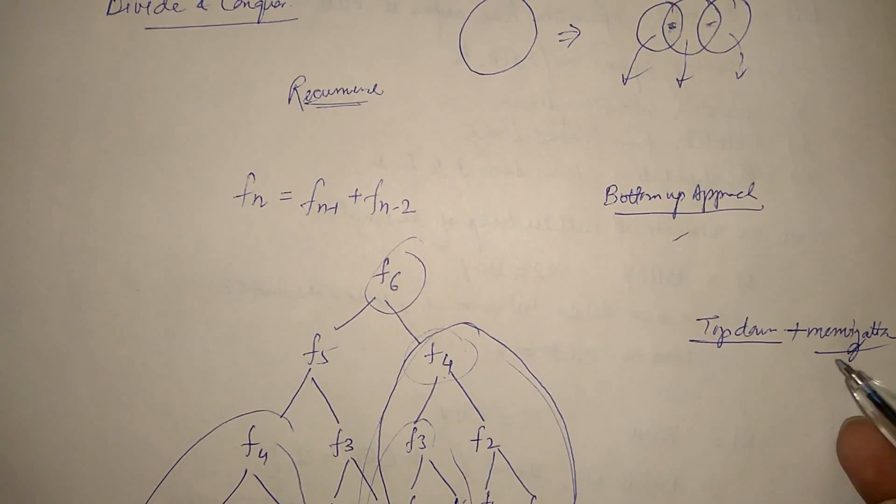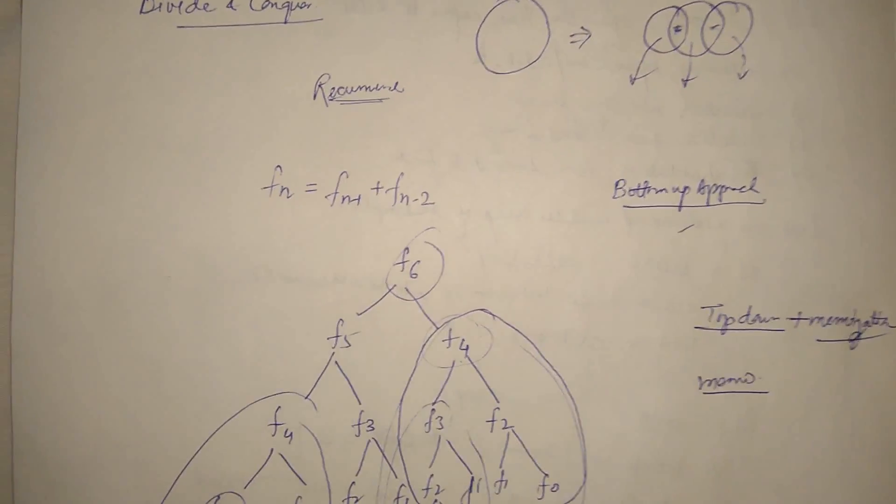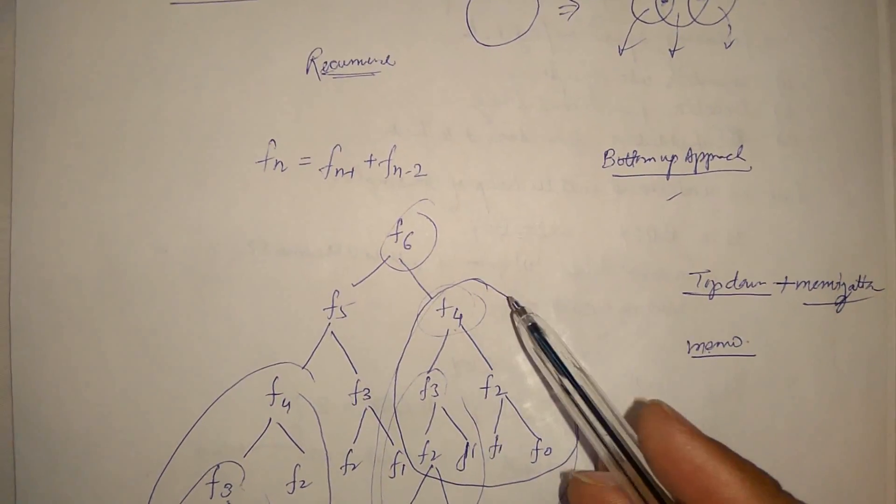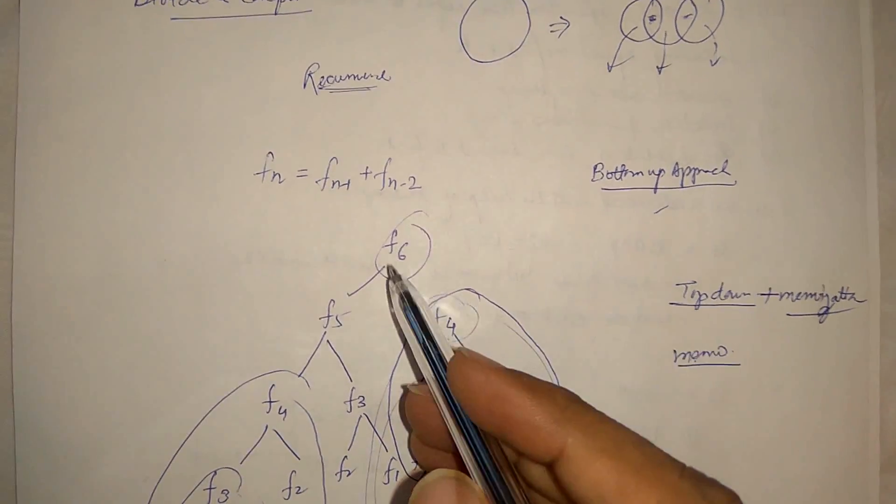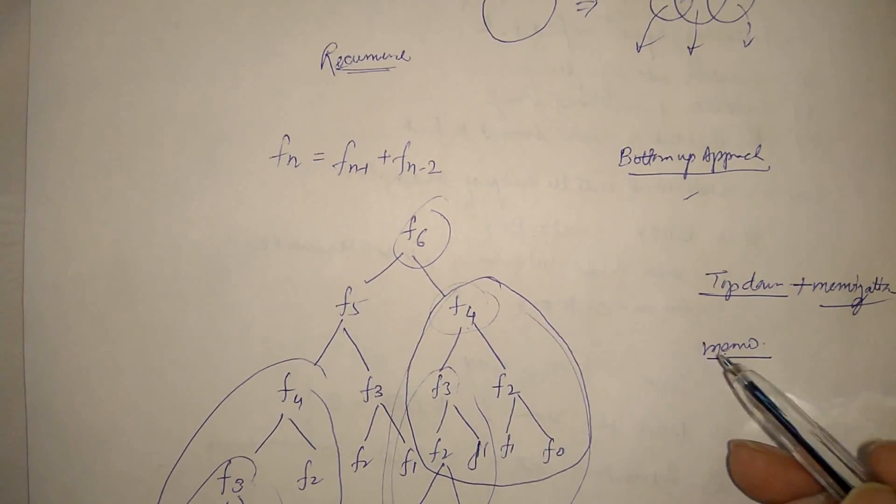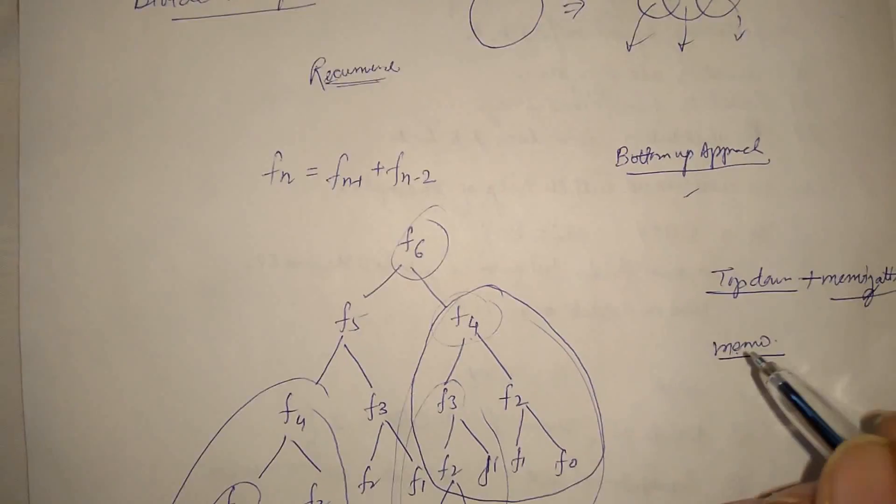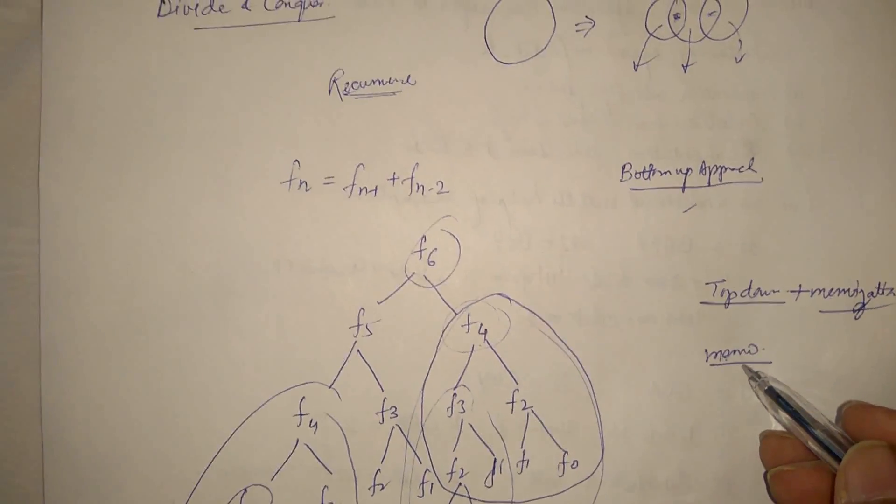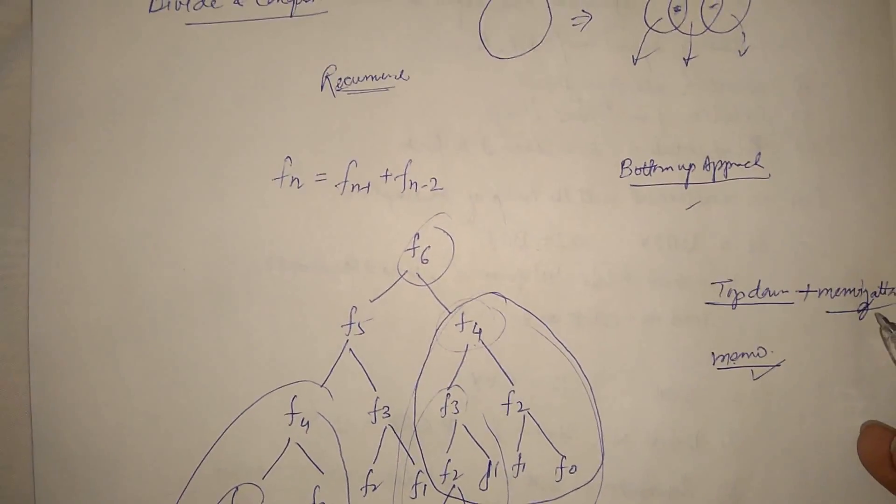So what is memoization? Memoization, what comes from memo? Memo means something where we record the thing. So we record the temporary result, which is going to be used in the next iteration. So we will follow the top down using memoization means we will start recording.